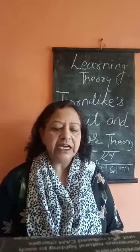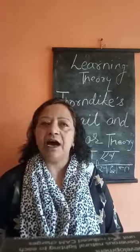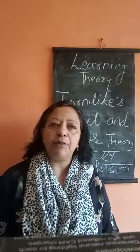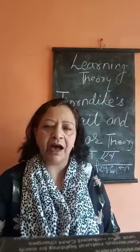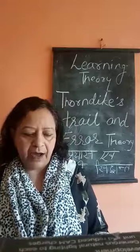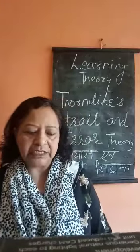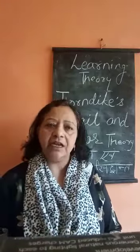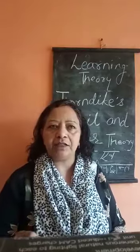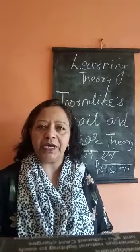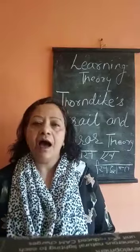Next point is Chance Success. By chance, the cat hit the latch and opened the cage and came out. Then comes Selection of Right Response (Priyatan ka Chayan). Now the cat begins to learn the correct response — swinging the latch to open the cage.